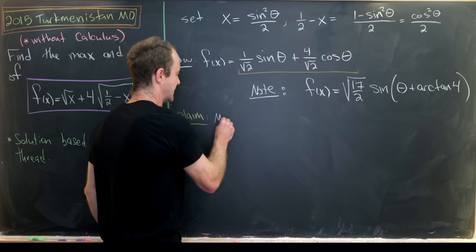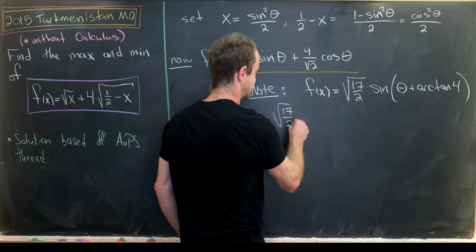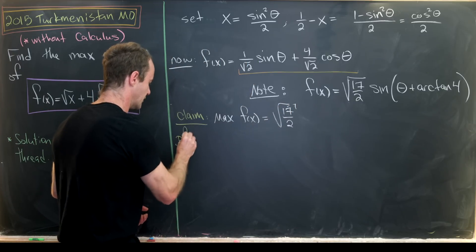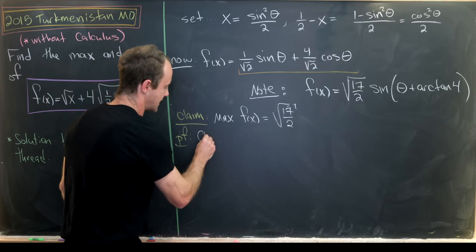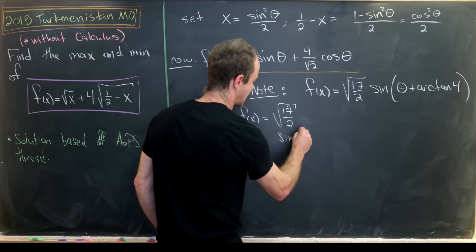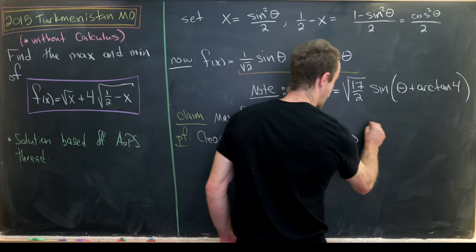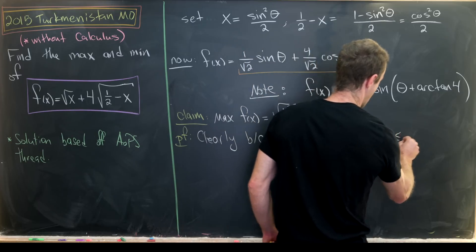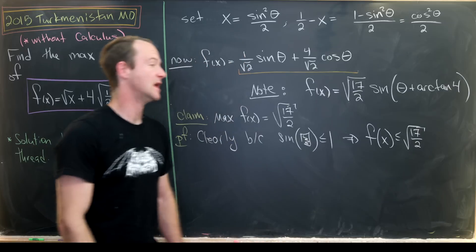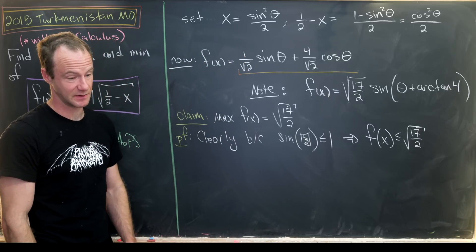So we'll say the maximum of f of x equals the square root of 17 over 2. So let's see maybe how that would go. I'll just say clearly because the sine of anything is less than or equal to 1, that implies that f of x is always less than or equal to the square root of 17 over 2.